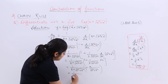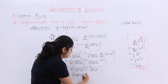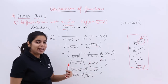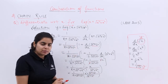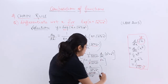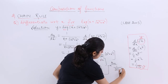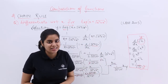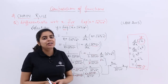After taking the LCM, we have 1/(x + √(a² + x²)) multiplied by (x + √(a² + x²))/√(a² + x²). The factor (x + √(a² + x²)) cancels, leaving the final answer: 1/√(a² + x²). This completes the solution using the chain rule for the CBSE previous year examination question of 2003.